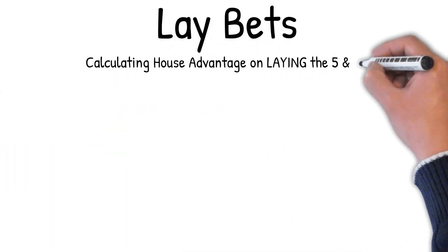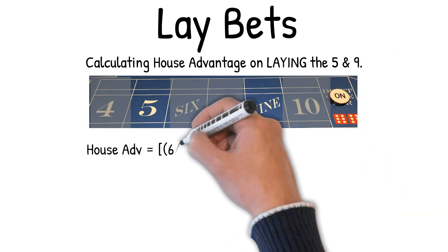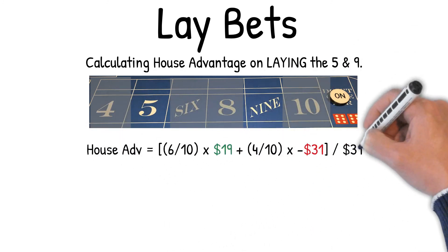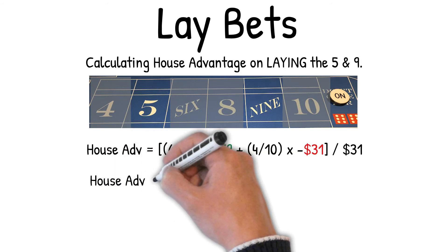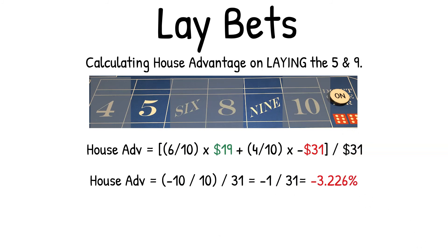Calculating house advantage on laying the five and nine. House advantage equals: 6/10 × $19 + 4/10 × (−$31), over $31. This equals (−10/10) / 31, which equals −1/31, which equals −3.226% house advantage.